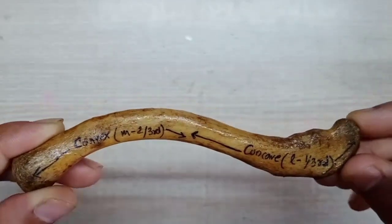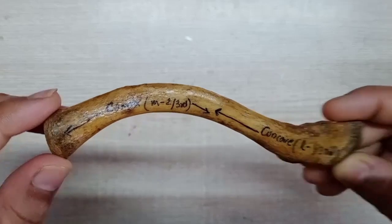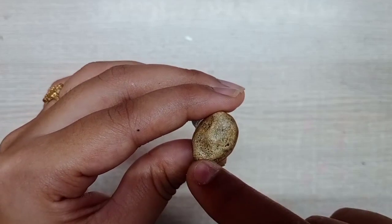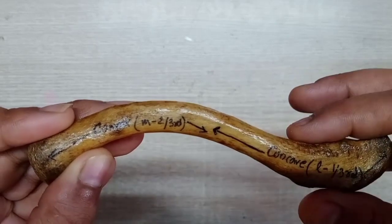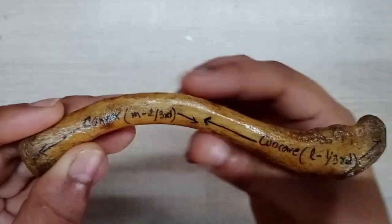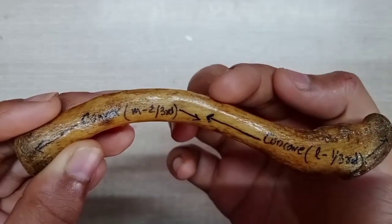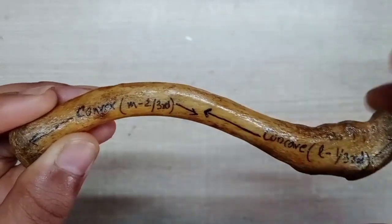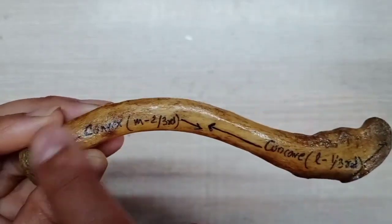When you determine the side, you have to know three features about the clavicle. The medial end is round, large, and quadrangular in shape. The lateral end is flat and broad. The third feature is the shaft — the shaft is concavo-convex, meaning concave at the lateral end and convex medially.